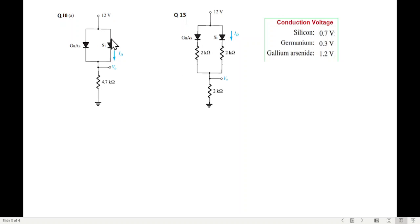Now we know that silicon requires 0.7 volt for it to become forward bias or conduct, and similarly germanium 0.3, and gallium arsenide which is given here requires 1.2 volt to turn on.